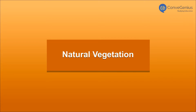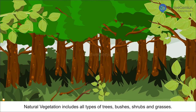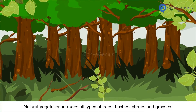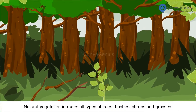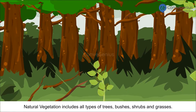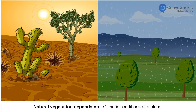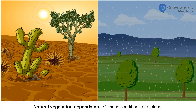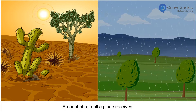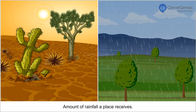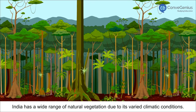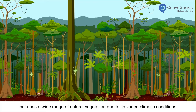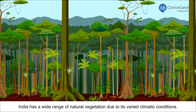Natural vegetation includes all types of trees, bushes, shrubs and grasses. Natural vegetation depends on climatic conditions of a place and the amount of rainfall a place receives. India has a wide range of natural vegetation due to its varied climatic conditions.